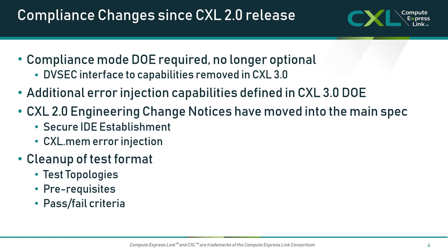A lot of the ECNs added to CXL 2.0 have become mainline, so the test criteria for those are cleaned up considerably as we go into CXL 3.0. In general with the CXL 3.0 release, we did a lot of test cleanup. We have test topologies to accommodate testing on switches and in the future on fabrics, and we have better test prerequisites and pass/fail criteria defined in the newer version of the specification.